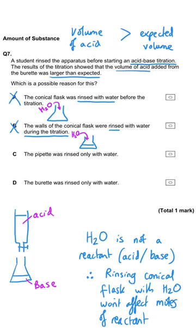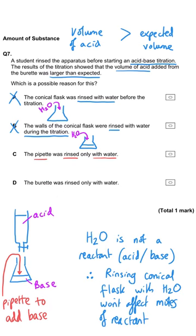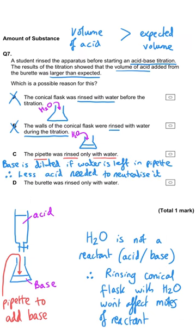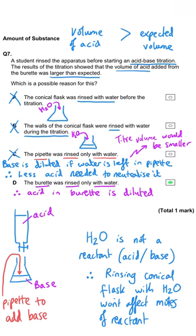Option C says the pipette was rinsed only with water. Since the base is in the conical flask, the pipette adds a diluted volume of base, which means less acid will be needed to neutralize it — resulting in a smaller than expected burette reading, not larger. So D must be correct: if the burette is rinsed only with water, the acid is diluted, meaning more of it will be needed to neutralize the base, giving a larger volume.